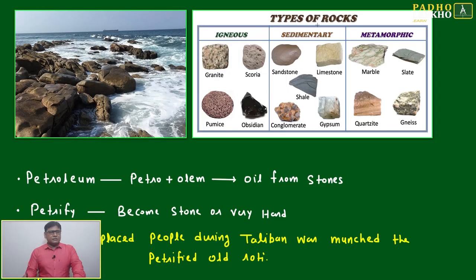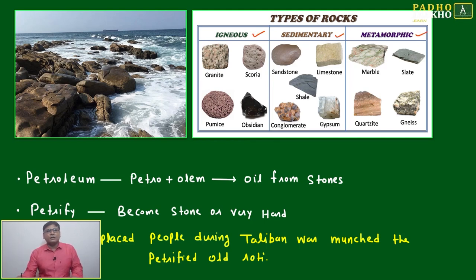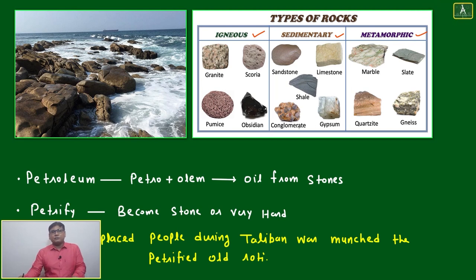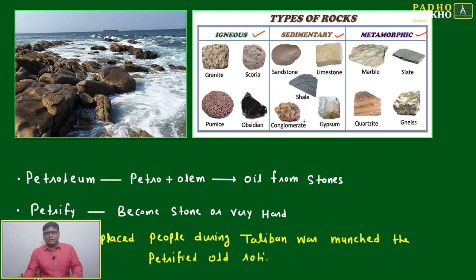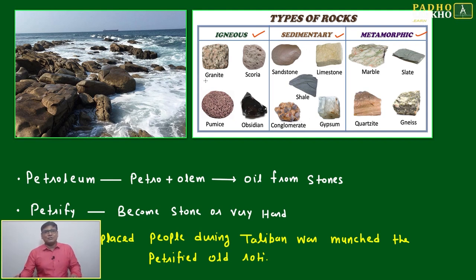To understand a little more information related to rocks — how many types of rocks are there? This is all school-level information I am just refreshing, I think from seventh or eighth standard social sciences. Types of rocks: igneous, sedimentary, and metamorphic.